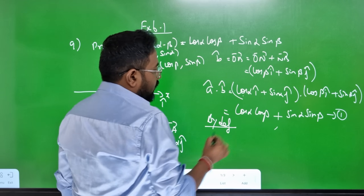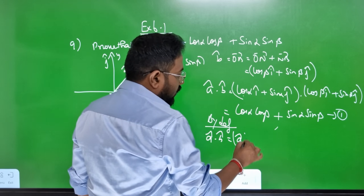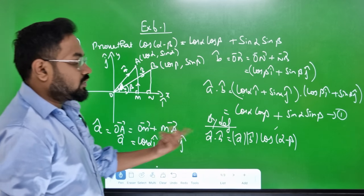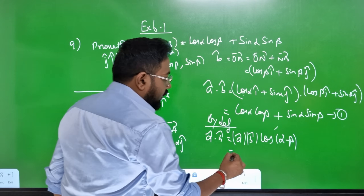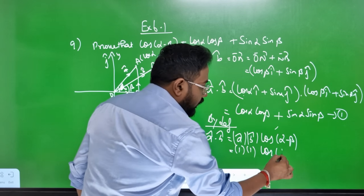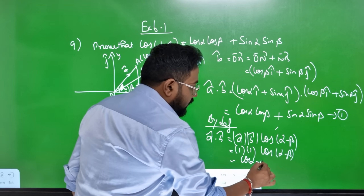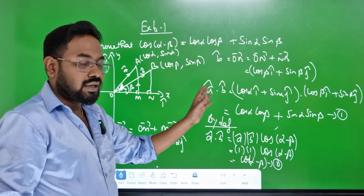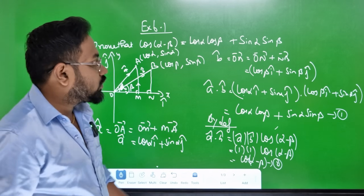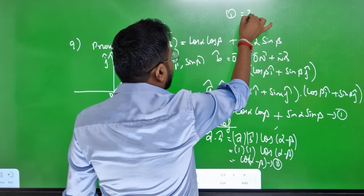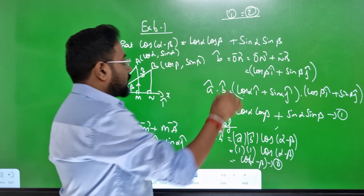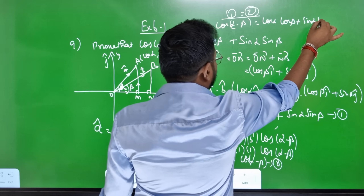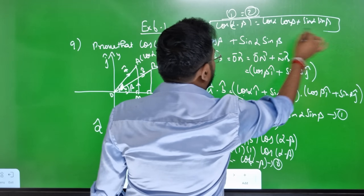By definition, a-cap dot b-cap is equal to |a-cap| · cos(alpha minus beta). This is the dot product definition. If a-cap equals 1, this becomes cos(alpha minus beta). This is the second equation. Looking at the first equation and the second equation — equation 1 equals equation 2 — and that is the answer.